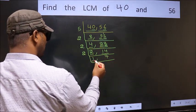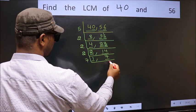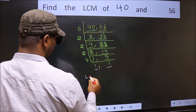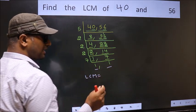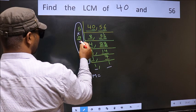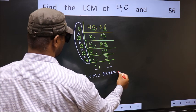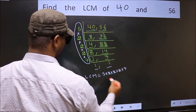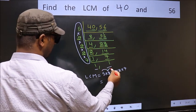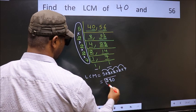Now we got 1 here. So focus on the other number 7. 7 is a prime number, so 7 ones are 7. We got 1 in both places. So our LCM is the product of these numbers: 5 × 2 × 2 × 2 × 2 × 2 × 7. Multiplying: 5 × 2 = 10, × 2 = 20, × 2 = 40, × 7 = 280. So 280 is our LCM.